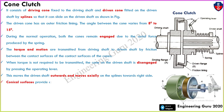The conical surface provides extra frictional force, hence the torque transmitted is higher than a single plate clutch. This conical surface provides extra frictional force, so it transmits higher torque as compared to a single plate clutch.